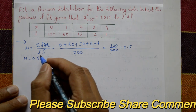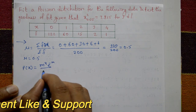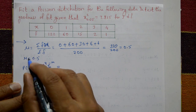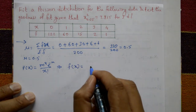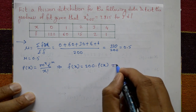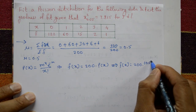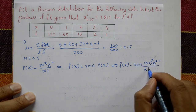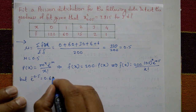Since mu equals 0.5, this is a Poisson distribution. The formula is p(x) = m^x × e^(−m) / x!. Here m equals the mean equals 0.5. The value of e^(−0.5) is approximately 0.6065.